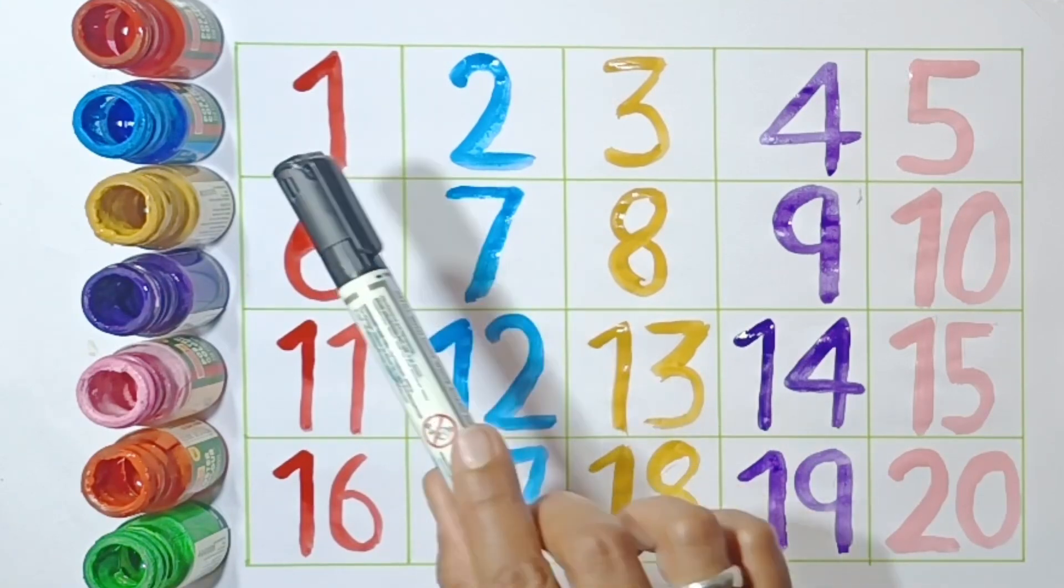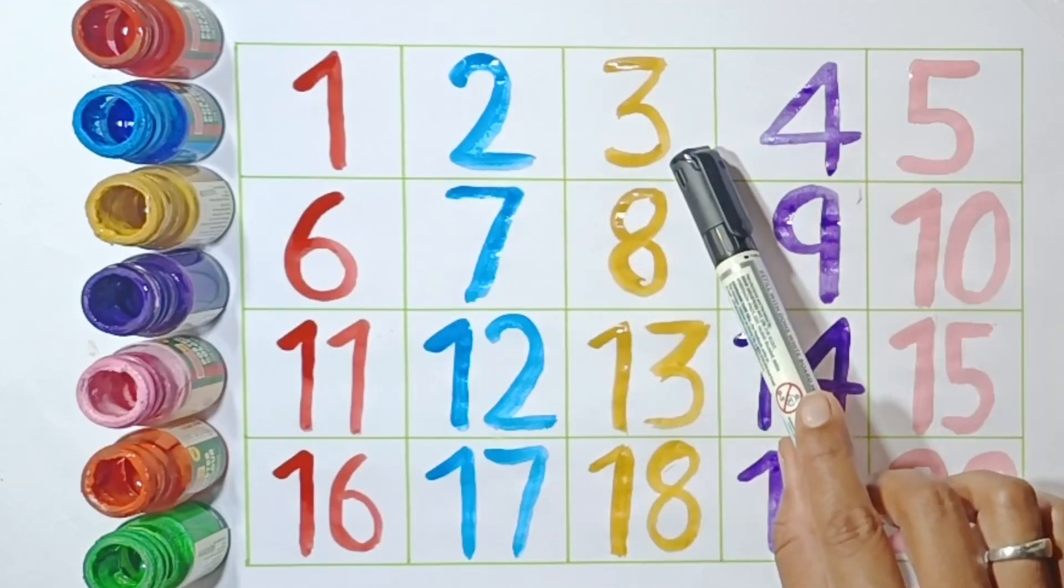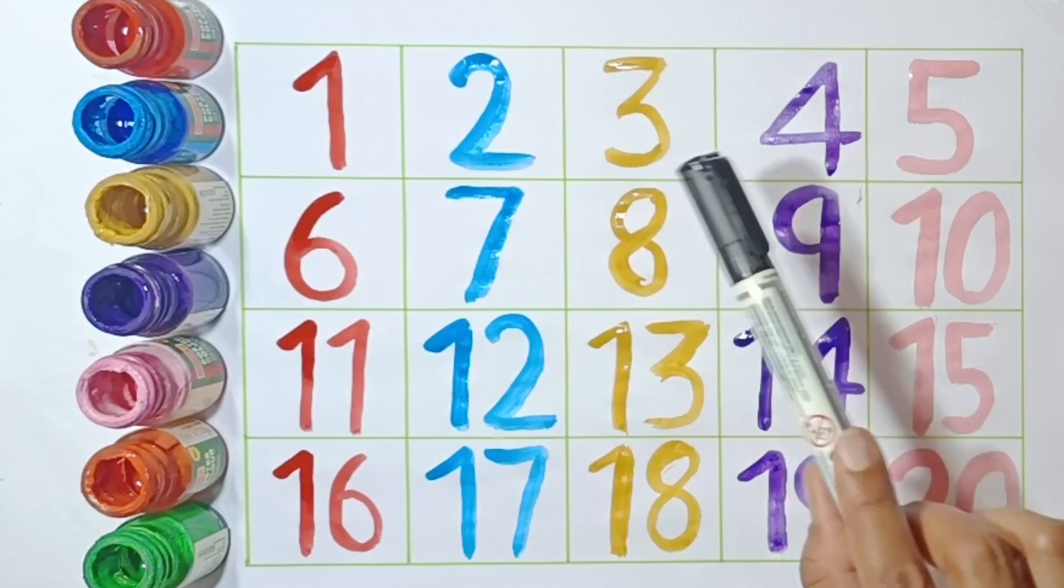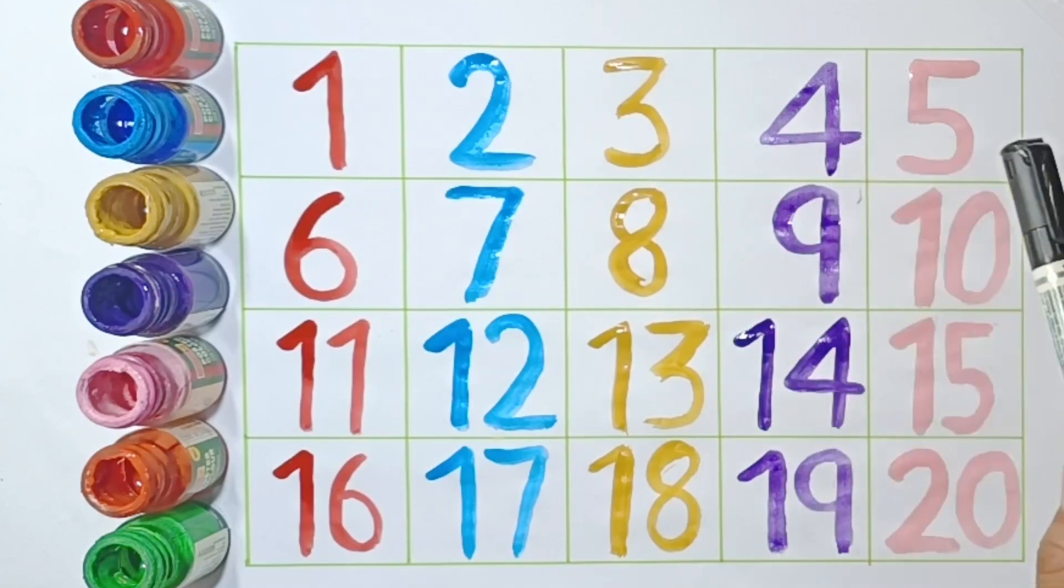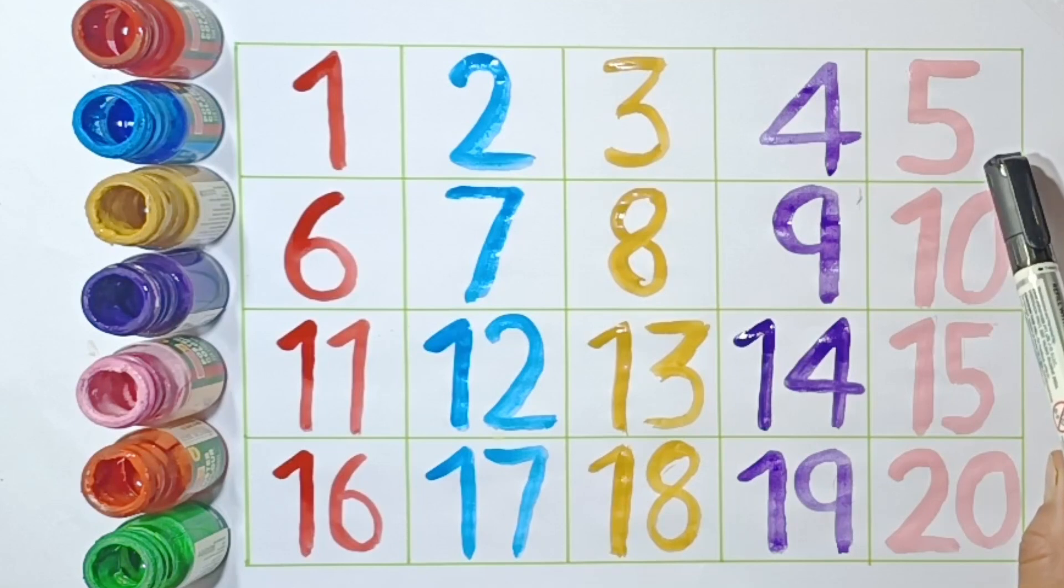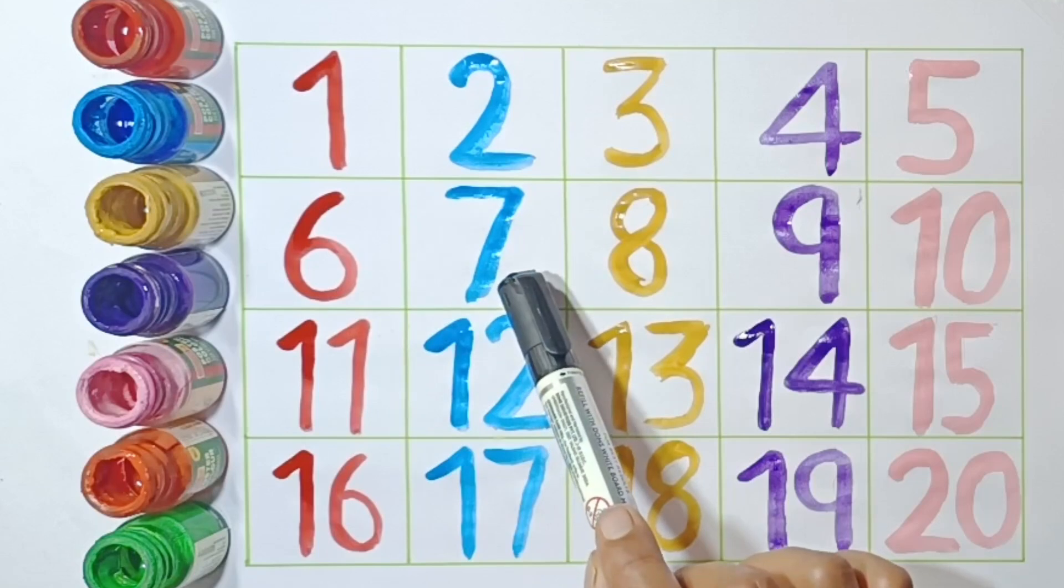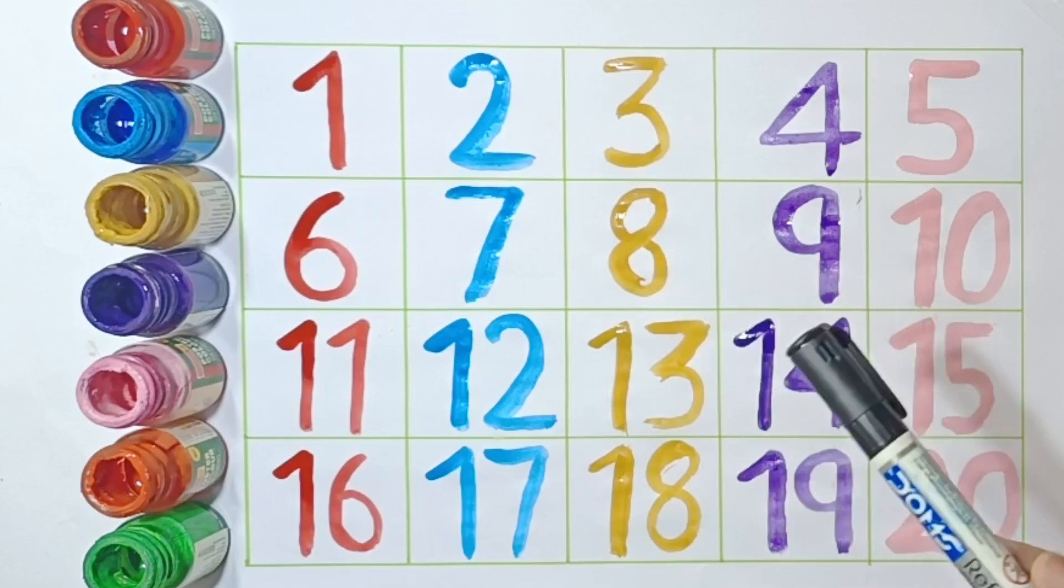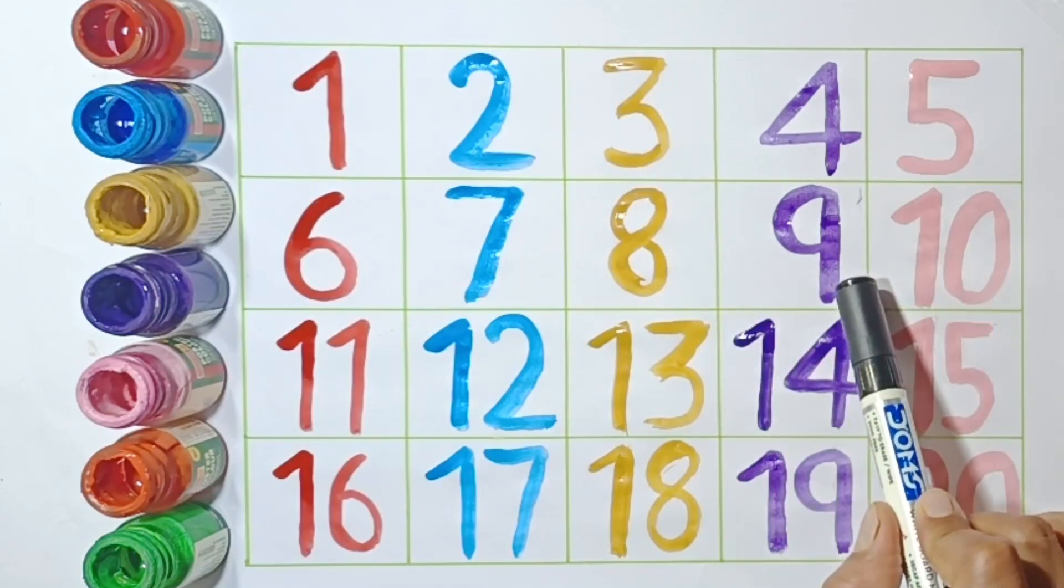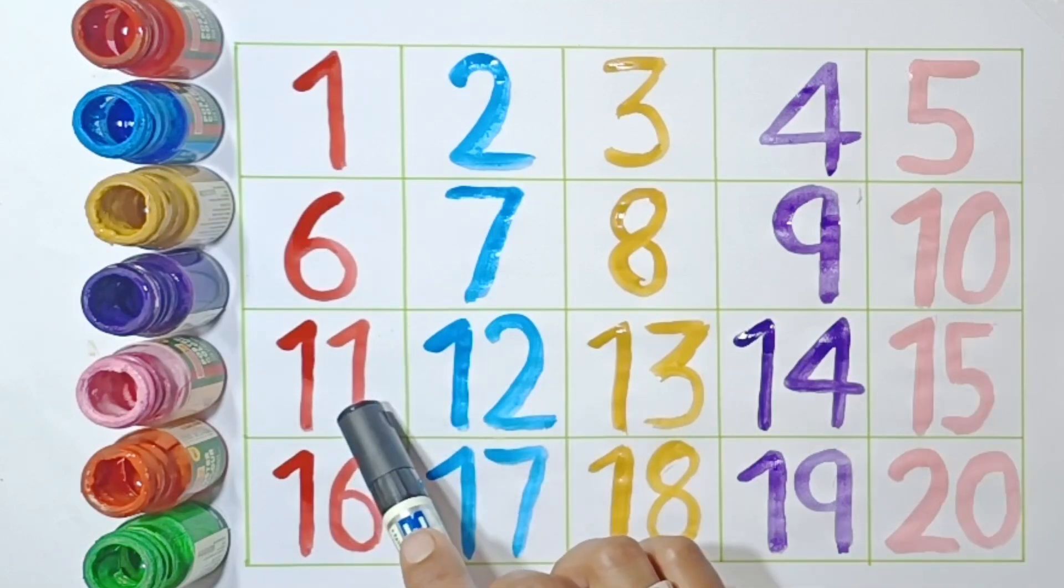1: O-N-E. 2: T-W-O. 3: T-H-R-E-E. 4: F-O-U-R. 5: F-I-V-E. 6: S-I-X. 7: S-E-V-E-N. 8: E-I-G-H-T. 9: N-I-N-E. 10: T-E-N.